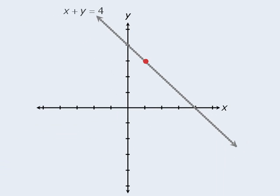Now when we say that a point is a solution to the equation, we mean that the coordinates of that point satisfy the equation. So the x-coordinate of this particular point is 1 and the y-coordinate is 3, and when we take the equation and replace x with 1 and y with 3, these coordinates add to 4, which means they satisfy the given equation.